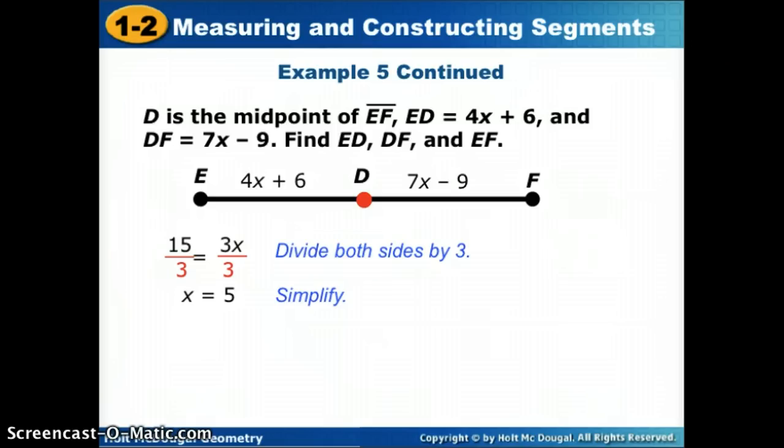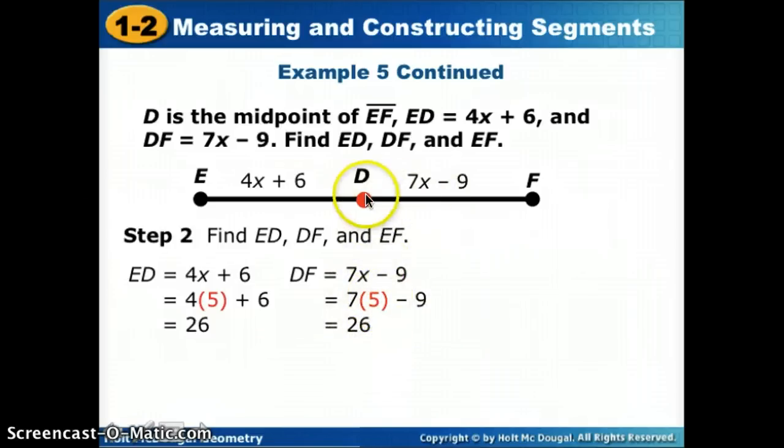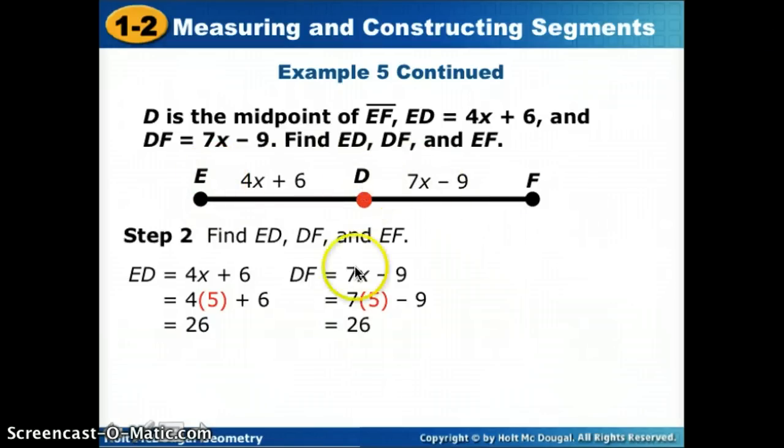Always go back up to your problem to see what did it ask you to do. Find ED, DF, and EF. That means I need to plug my missing number X into each of those values. If ED was given as 4X plus 6, well now X is 5, so I'm going to plug 5 in for X and simplify. For DF, I'm going to plug 5 in for X again and simplify. Since those two halves are supposed to be equal, you should get that those measures are the same. To get the whole, ED was 26, the other half is 26, so the whole measure is 52.